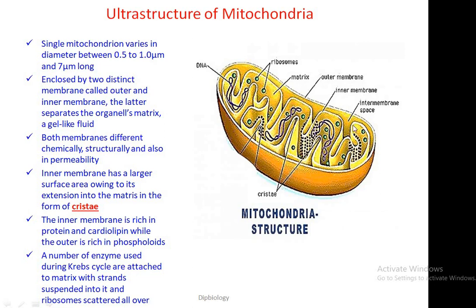A single mitochondrion varies in diameter from 0.1 to 1 micrometer and is 7 micrometers long. It is enclosed by two distinct membranes called the outer membrane and the inner membrane. The inner membrane separates the organelle's gel-like interior called the matrix. Both membranes are different chemically, structurally, and also in permeability.